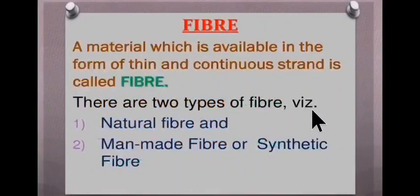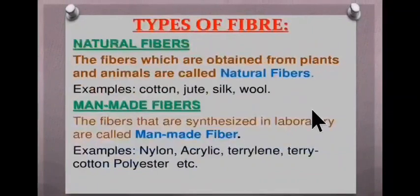Now, what is fiber? A material that is available in the form of thin and continuous strand is called a fiber. There are mainly two types of fiber: natural fiber and man-made fiber or synthetic fiber. The fibers which are obtained from plants and animals are called natural fibers. Examples are cotton, jute, silk and wool.